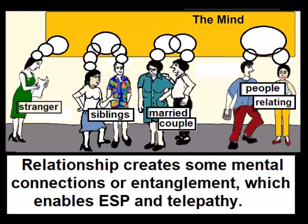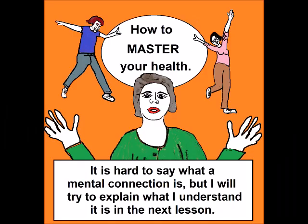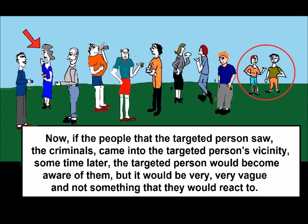Relationship creates some mental connections or entanglement which enables ESP and telepathy. It is hard to say what a mental connection is, but I will try to explain what I understand it is in the next lesson. Now, if the people that the targeted person saw — the criminals — came into the targeted person's vicinity sometime later, the targeted person would become aware of them, but it would be very, very vague and not something that they would react to.